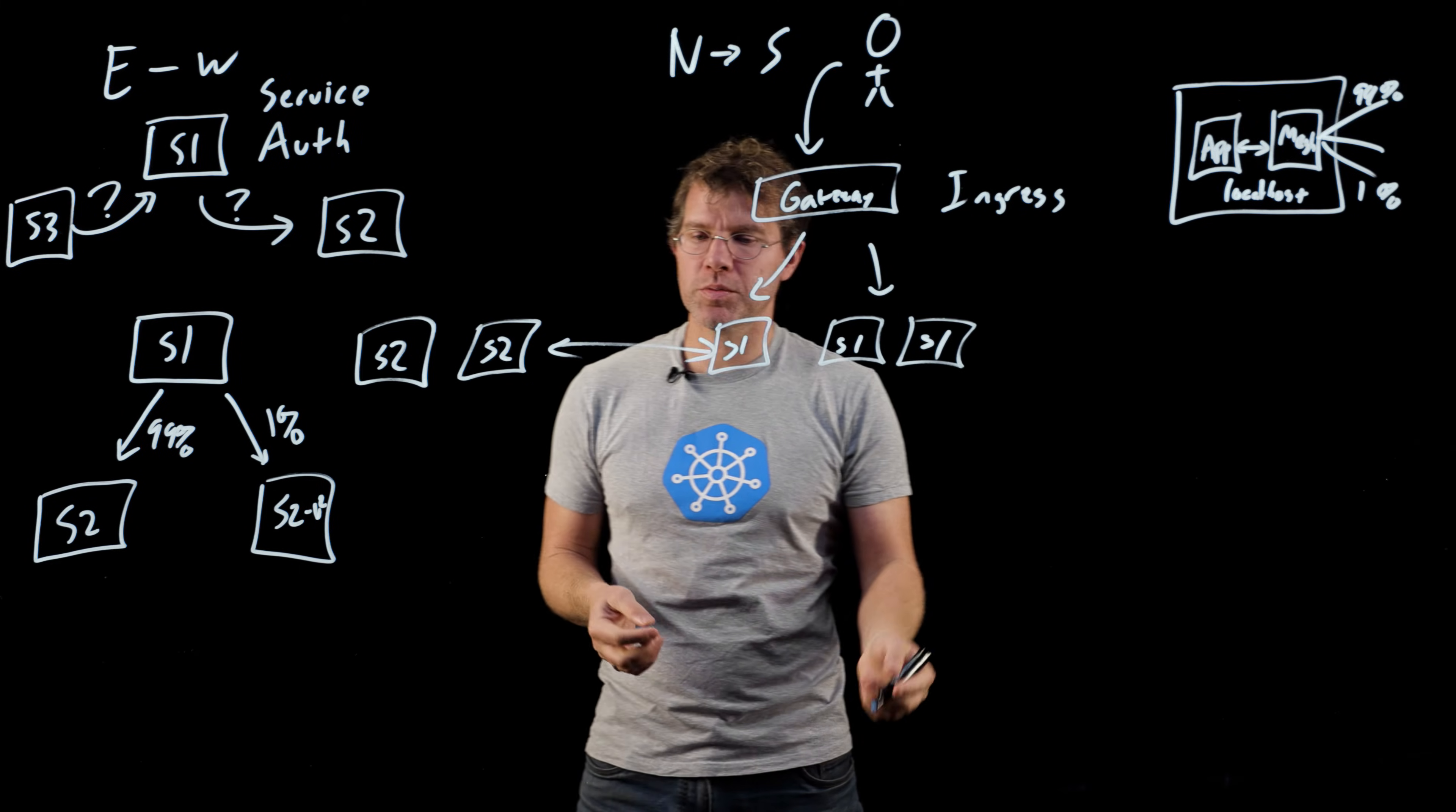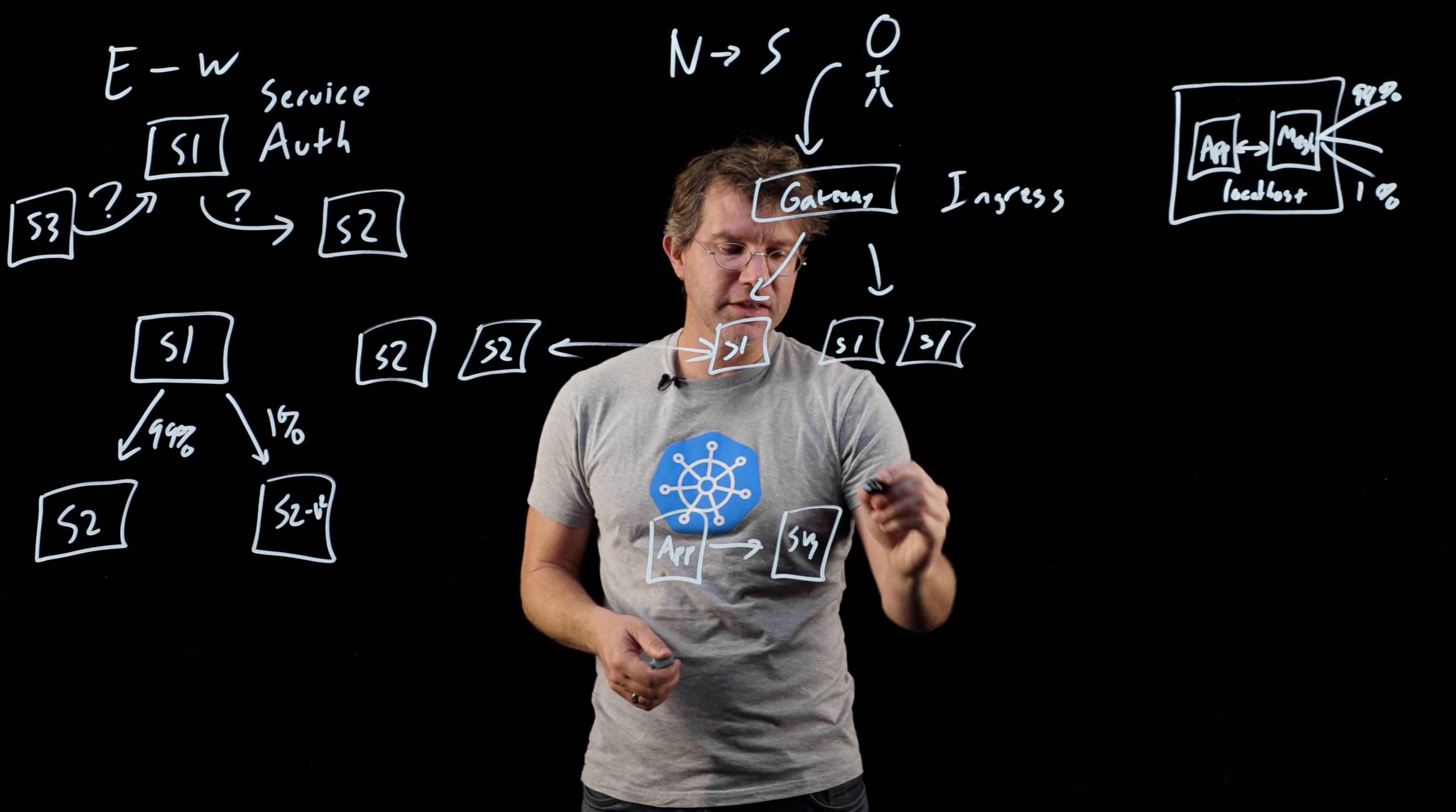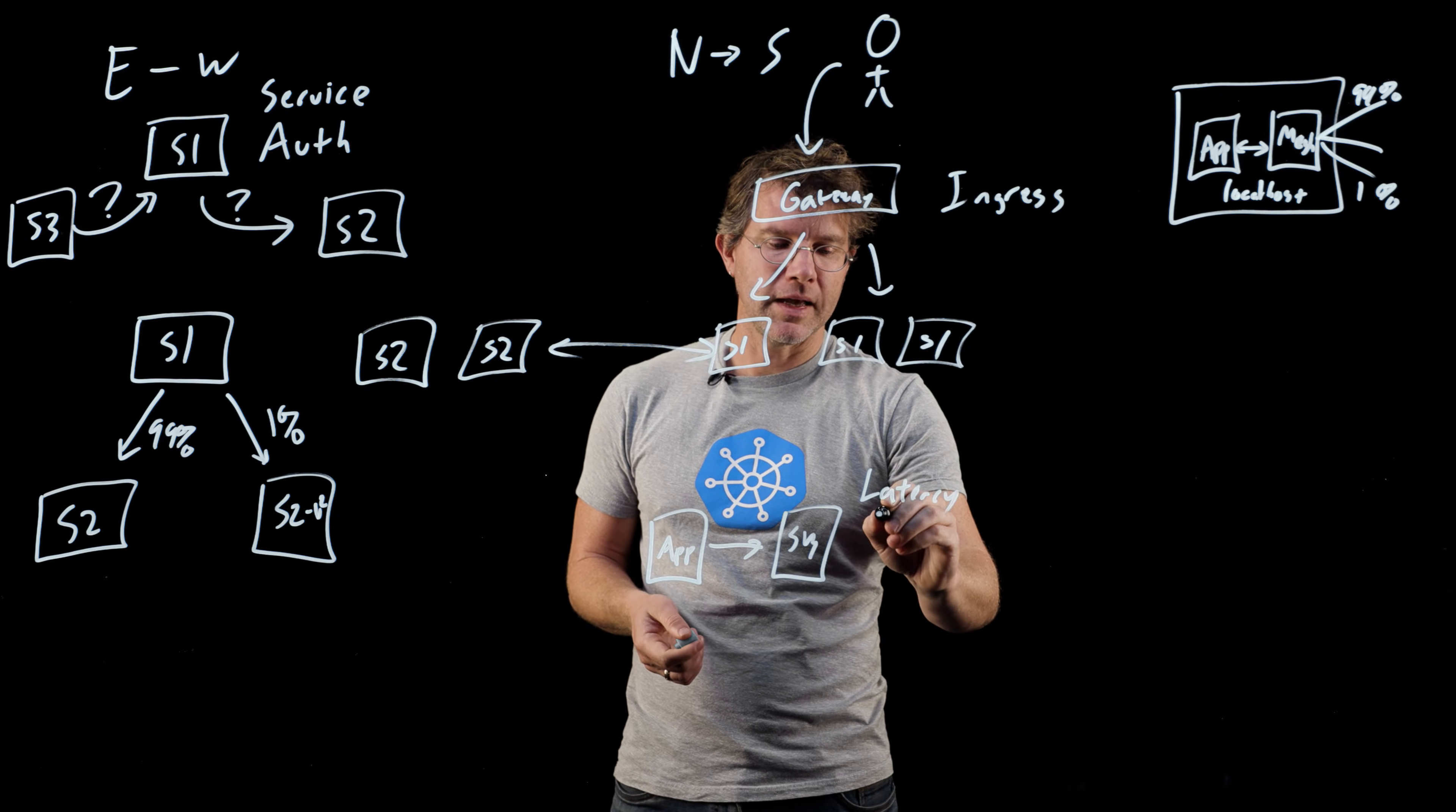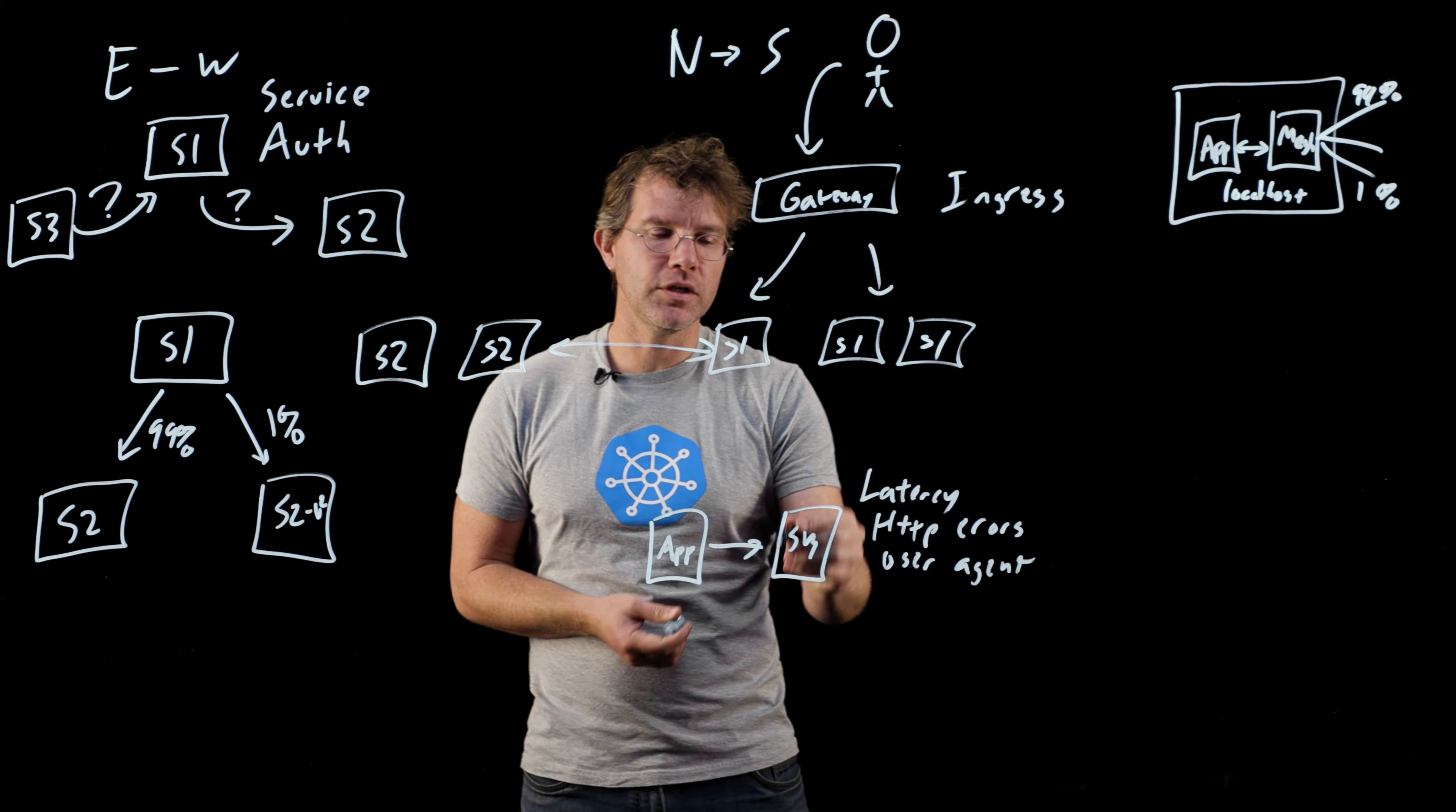The third thing that the service mesh provides for you is that if you have your app and you have the service mesh, and it's talking through that proxy, this proxy can actually collect a lot of metrics. It can collect metrics like latency, HTTP errors, user agents, and many other metrics that are useful to you.